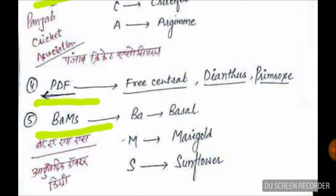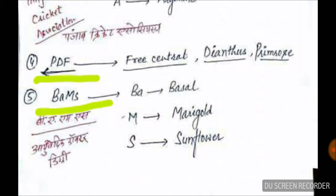For free-central placentation, the trick is PDF — F for free-central, D for dianthus, P for primrose. Use the word PDF to recall these plant examples.